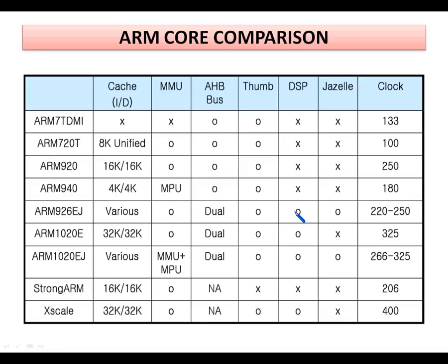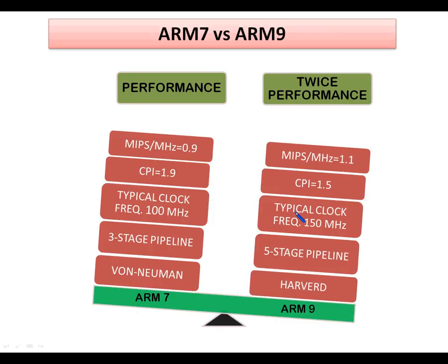This is a comparison between the ARM7 and ARM9 family processors. The ARM core uses either a von Neumann or Harvard style architecture. In von Neumann architecture, both data and instructions use the same bus; ARM7 is an example of von Neumann architecture using a 3-stage pipeline. Harvard architecture uses a separate bus for data and instructions, increasing the speed of the processor by employing a 5-stage pipeline used in ARM9.